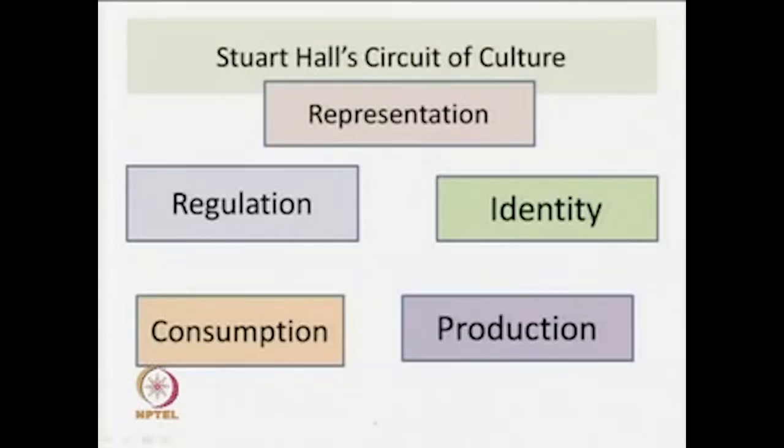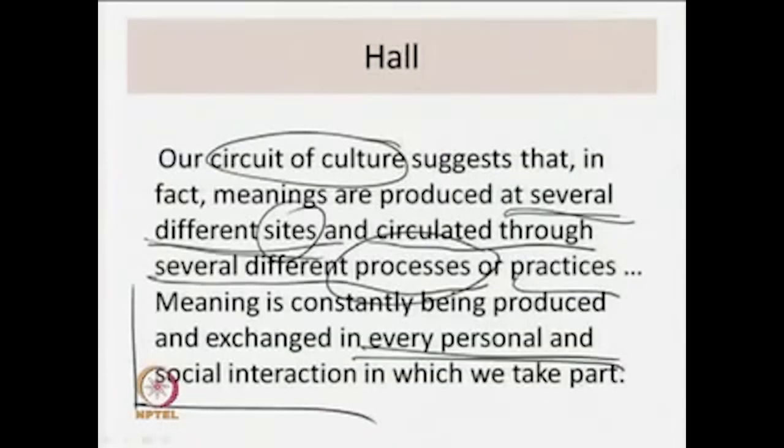This is something that very few theorists have said as brilliantly as Hall. Theorists have talked about meaning being produced in several sites and through different processes — but tying meaning down to everyday practices and the reproducibility of meaning, and the constant production and exchange of meaning happening in almost every single social interaction and conversation, is something that Hall has brilliantly given us. This is Hall's circuit of culture — and the circuit of culture suggests that meanings are produced at different sites.